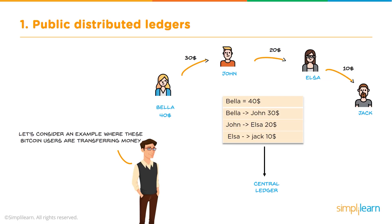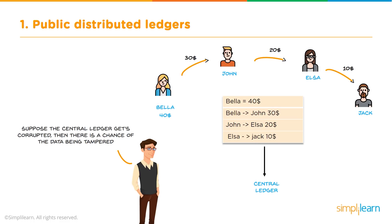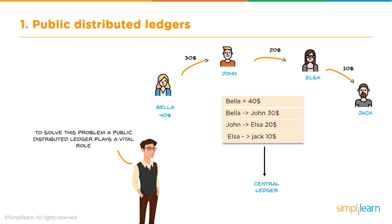Let's take an example where Bitcoin users are transferring money. Bella is trying to transfer money to John, John to Elsa, and Elsa to Jack — three transactions to be initiated. Now suppose these transactions were happening on a central ledger and it gets corrupted, creating a chance of the data getting tampered. To solve this problem, a public distributed ledger plays a vital role.